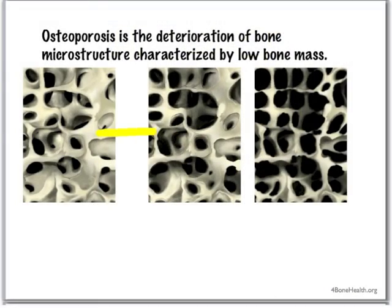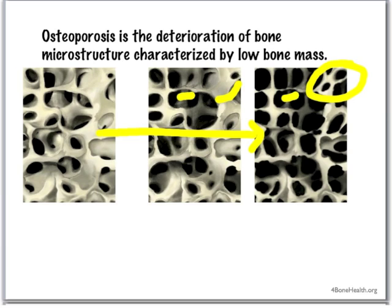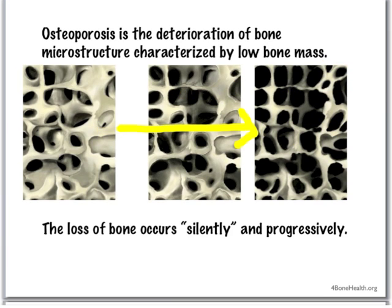Starting with normal bone structure, these time-lapse photos show bone loss that occurs with aging and menopause. Osteoporosis is the deterioration of bone microstructure, characterized by low bone mass. Both the bridges and the plates become thinner and thinner. The plates actually become more rod-shaped in structure, and some of the connections between the plates are lost.